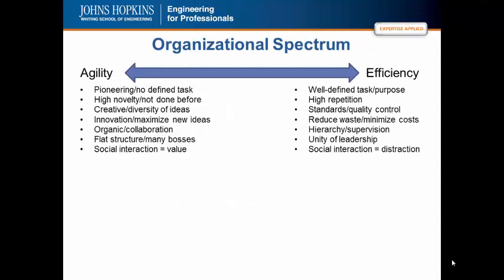There is an organizational spectrum with agility on one end and efficiency on the other. When you create well-defined tasks for highly repetitive work, set standards and quality control, reduce waste, minimize costs, create hierarchy and supervision, and have unity of leadership with one person calling the shots, you are creating efficiency. In this environment, social interaction is considered a distraction from the task. This only really works when there is a well-defined task done repeatedly — that's where you gain enough data to determine which method or process is better.